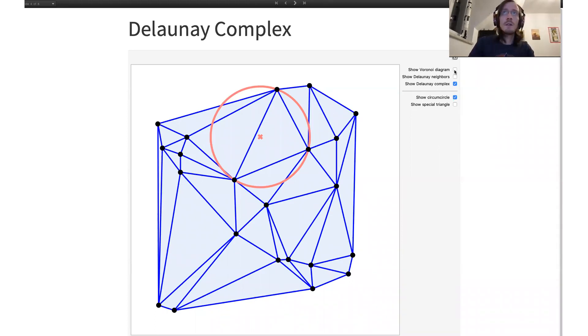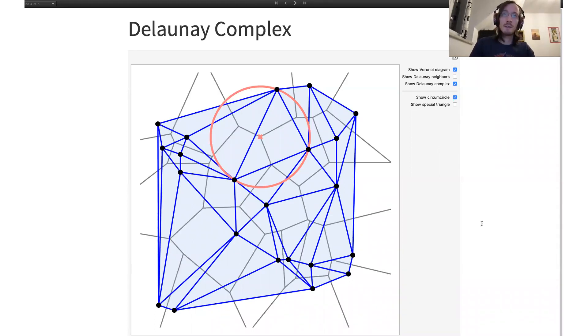So to summarize, Delaunay complexes can be defined as the intersection pattern of the Voronoi cells or using circumcircles, checking whether they are empty or not.